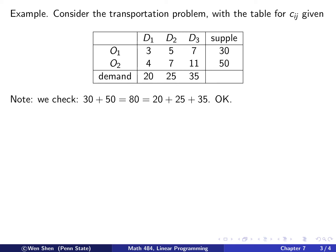Before we start, let's check if the total demand equals total supply. 30 plus 50 is 80, and the total demand is 20 plus 25 plus 35, which is also 80. They match, so this passes checking.